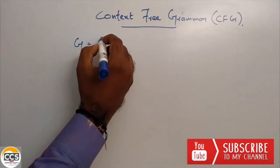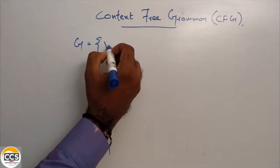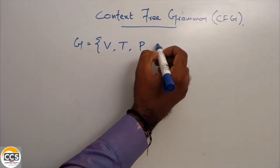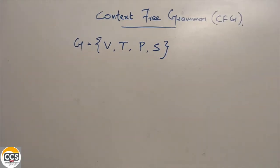What do we do? A grammar is represented as a 4-tuple. G equals to V, T, P, S. In general grammar, if you know what grammar is in the English language — that is sentence formation, certain rules, that is a verb — so that is a grammar.